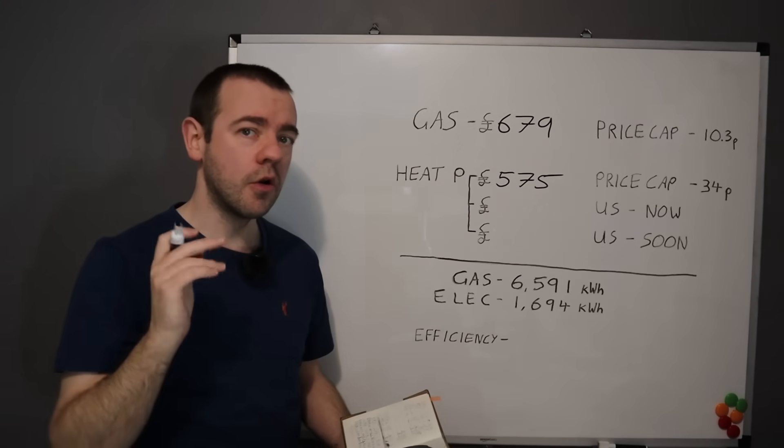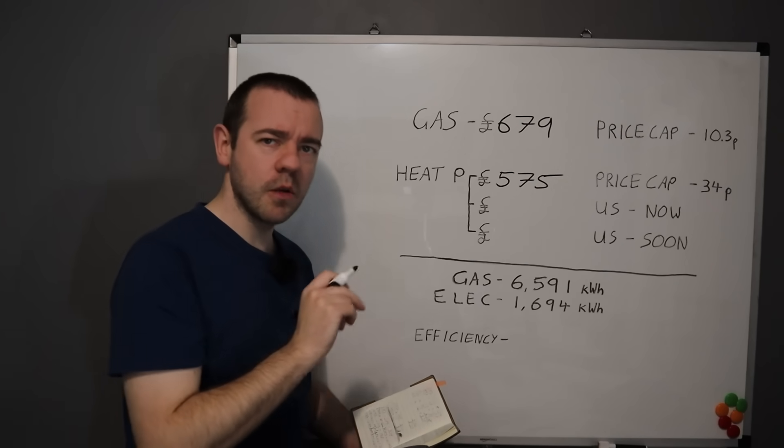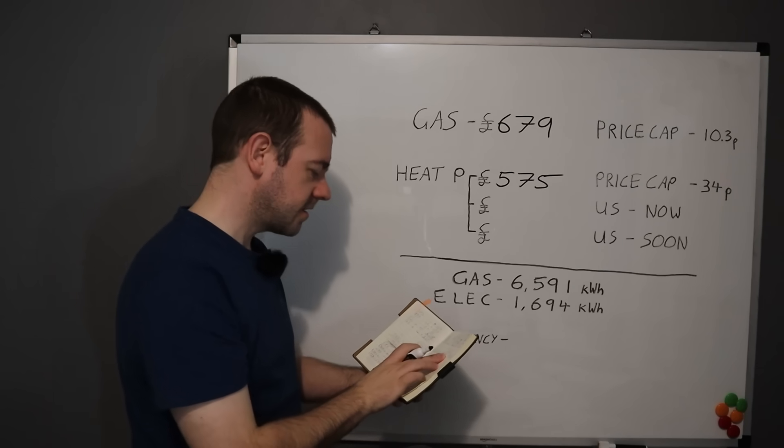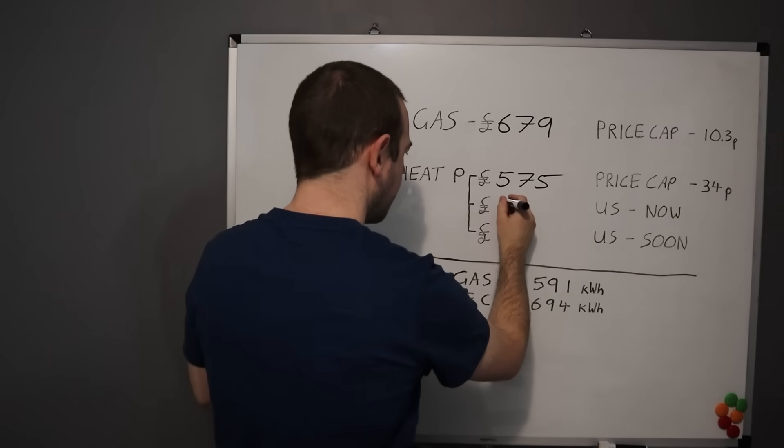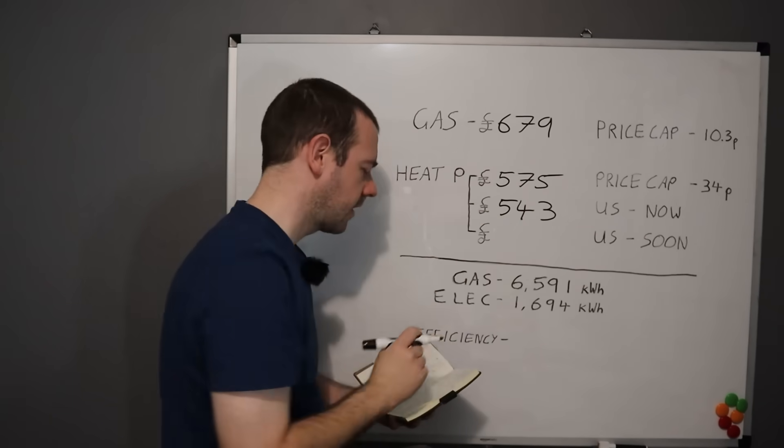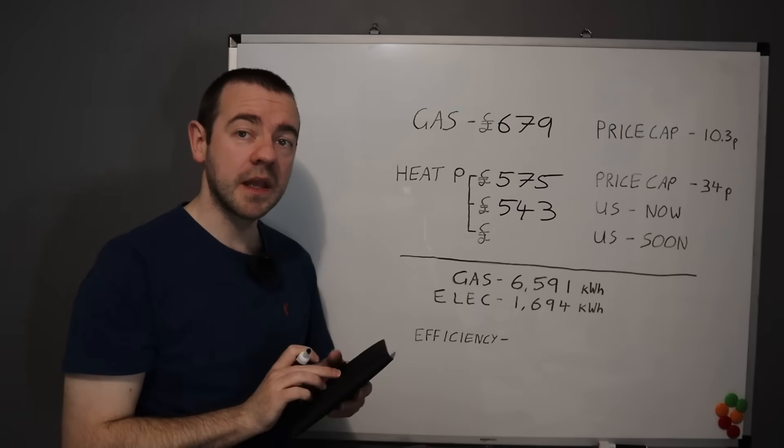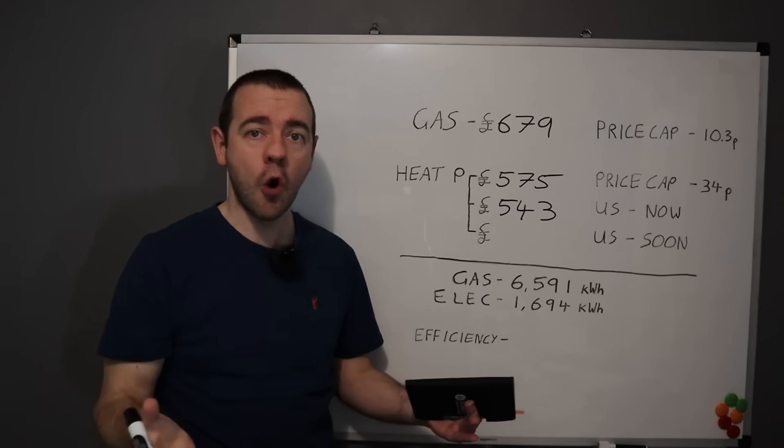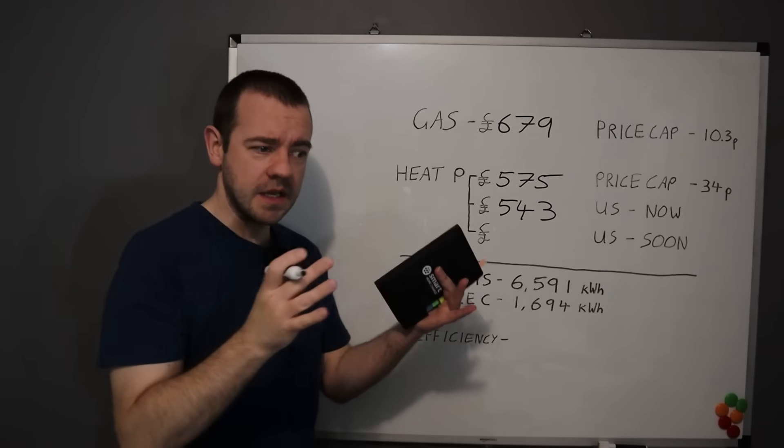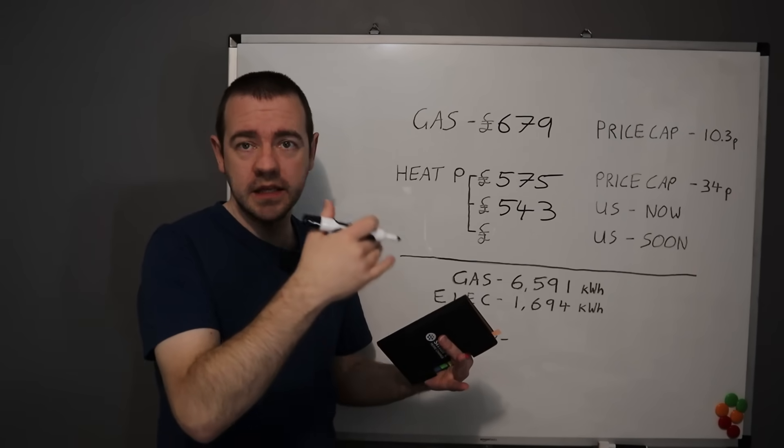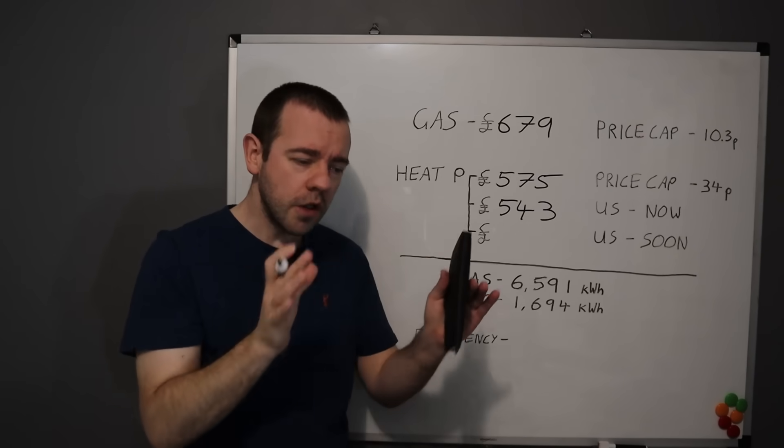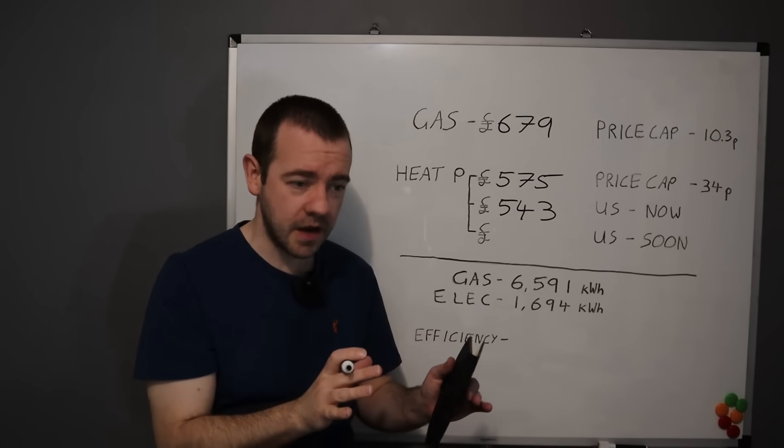So let's start with gas. The price cap of that of course is 10.3 pence. I have all the figures here on my book of truth. Gas cost us 6,591 kilowatt hours, which works out at 10.3 pence at 679 pounds. Can you guess I got a new black pen for that bit. Now the heat pump, if you're on the price cap, then that would have cost 575 pounds of electricity to run the heat pump.